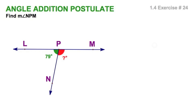In exercise 24, we're going to use the angle addition postulate to find the measure of this red angle. That would be NPM. Well, a couple things here. These two are adjacent angles. They share the ray PN.